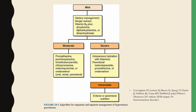Recall that these are examples of anti-emetics. For severe cases of hyperemesis gravidarum, we hospitalize the patient and start intravenous hydration with thiamine. We can give metoclopramide, promethazine, or ondansetron as anti-emetics. For cases of intractable hyperemesis gravidarum, we can start patients on enteral or parenteral nutrition.